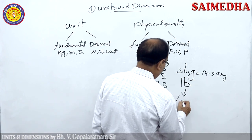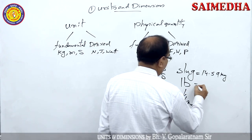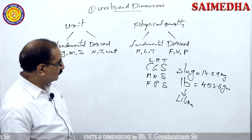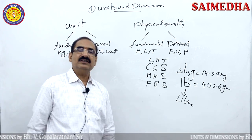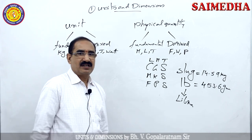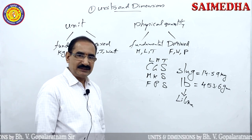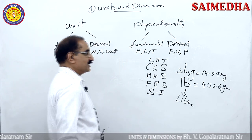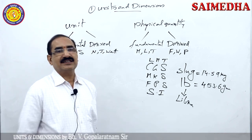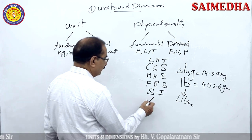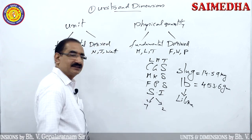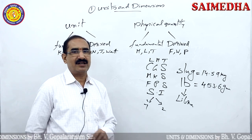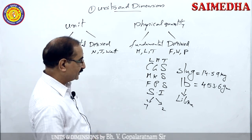We have three systems: CGS, MKS, and FPS. However, not all physical quantities can be measured in these three systems — for example, temperature has no unit in CGS, MKS, or FPS. That is why another system was developed: SI, or Système International. SI contains seven fundamental physical quantities and two supplementary physical quantities, totalling nine types of units, with which we can measure all physical quantities in the universe.